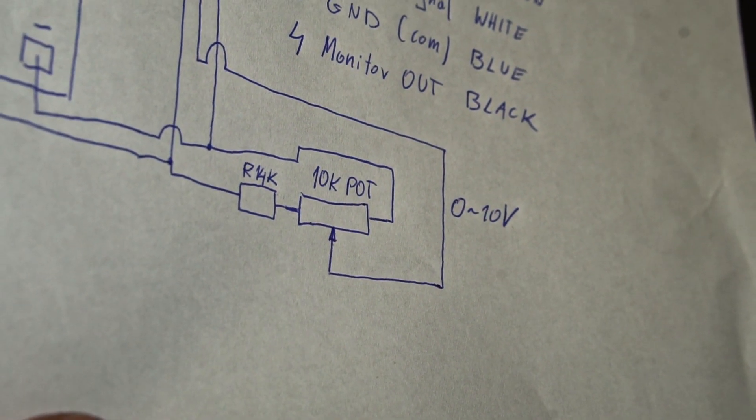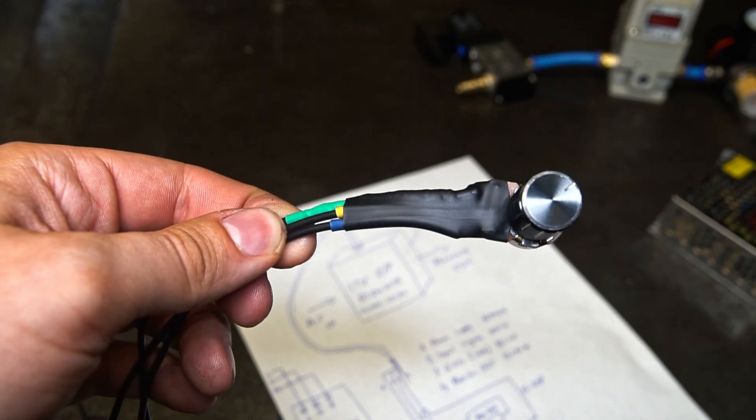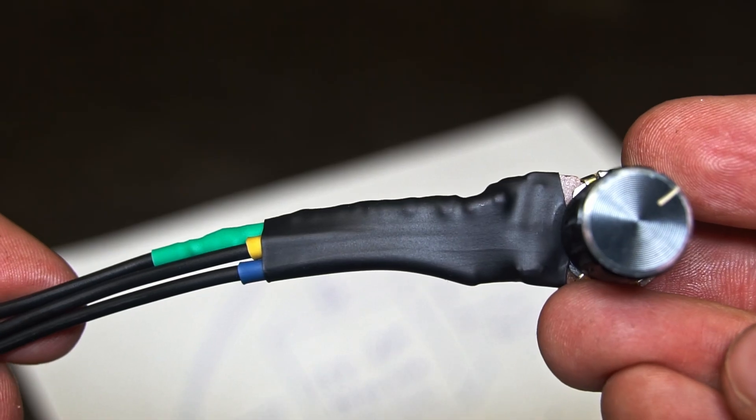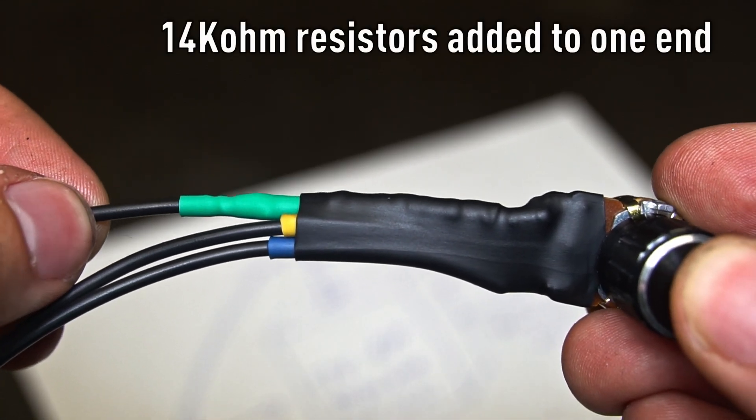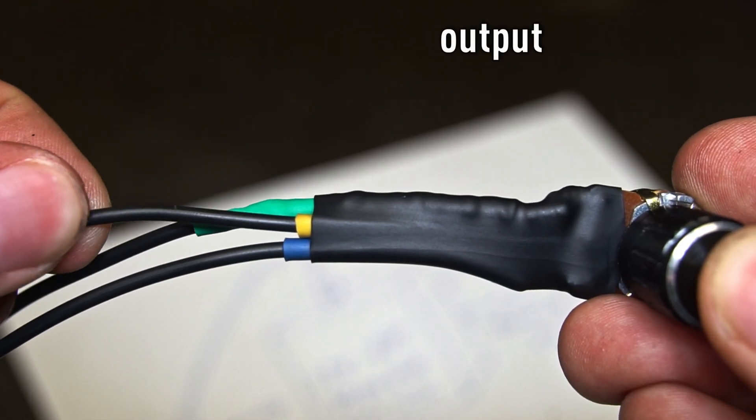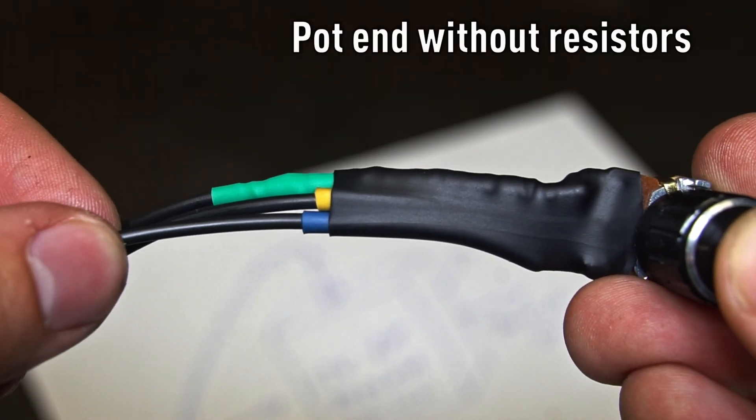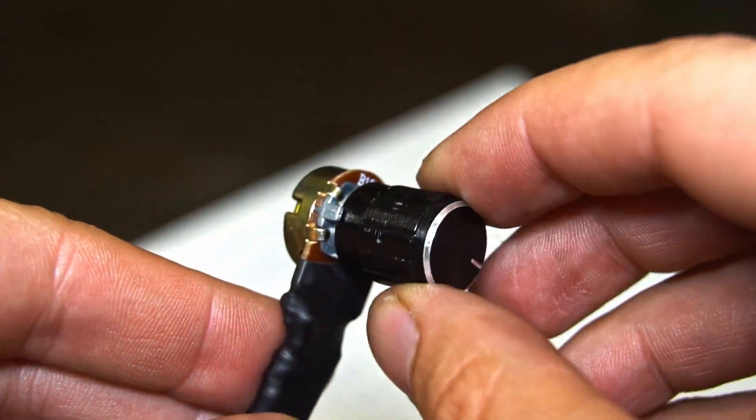Now the potentiometer circuit which will create our 0 to 10 volt signal. I will try a 10k potentiometer with a soldered 14k resistor to one of its ends. The middle one is the output and the last one will be the other end of the potentiometer.